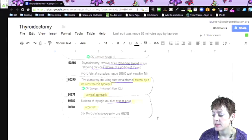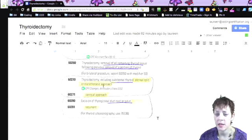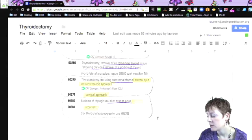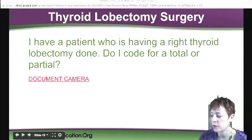And then this 60270 thyroidectomy including substernal thyroid, sternal split or transthoracic approach. So obviously many times with CPT coding, the approach will dictate which codes we're going to use over others. So hopefully that is a good little overview for you of thyroid surgery coding.